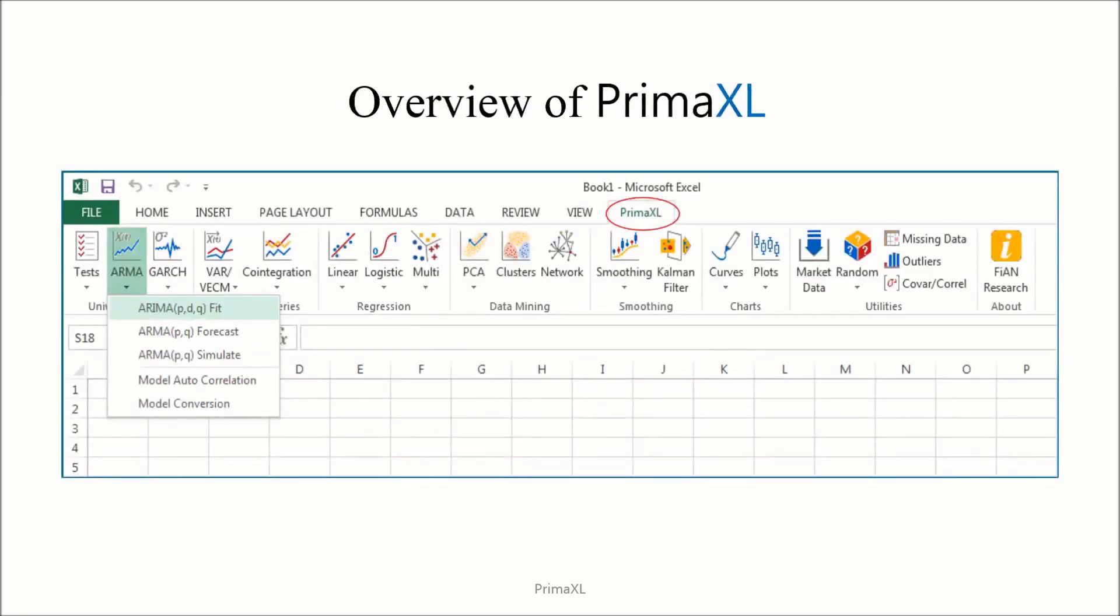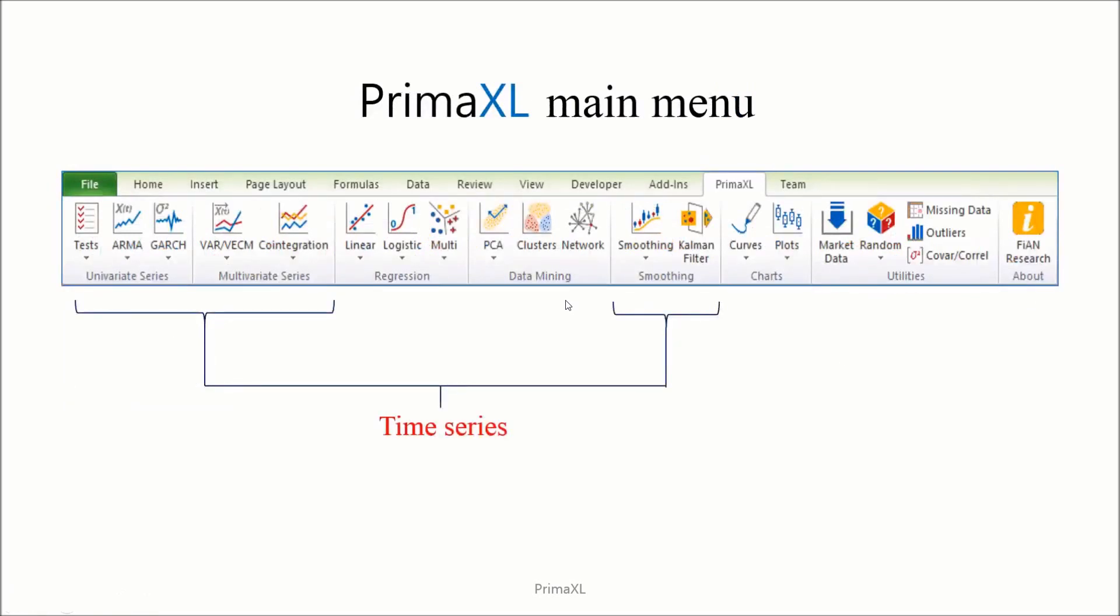Let's do a quick overview. You can click on the PrimaXL tab and access its main menu. Then, you can select different tasks from the menu. There are three categories of tasks you can do.